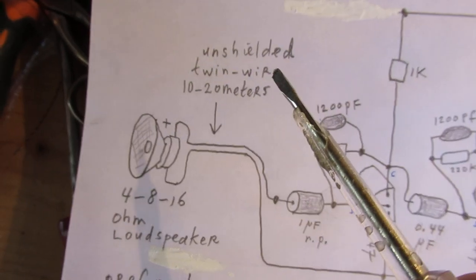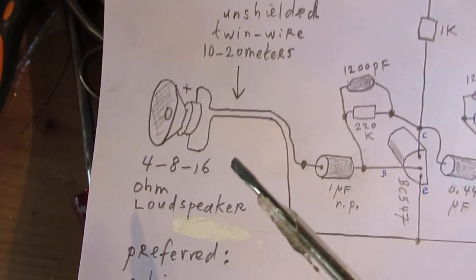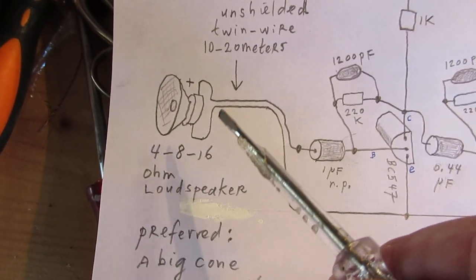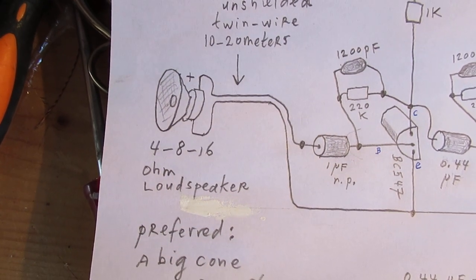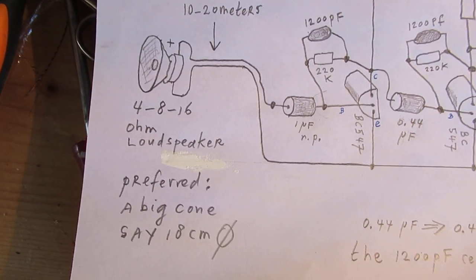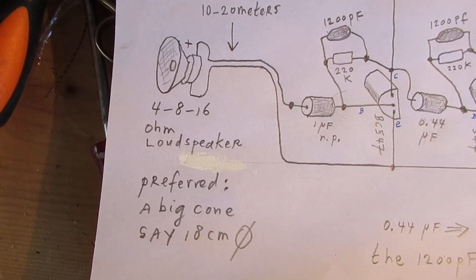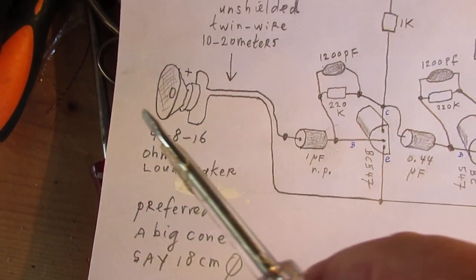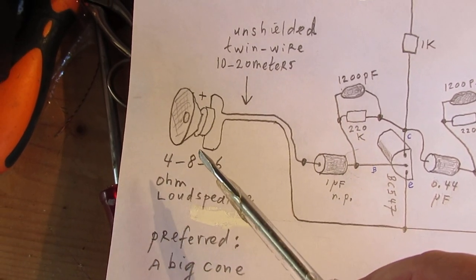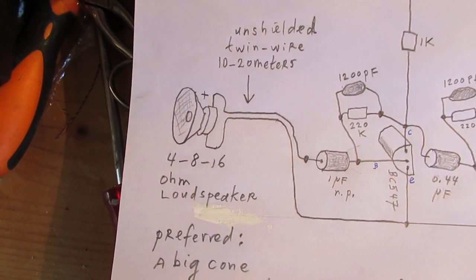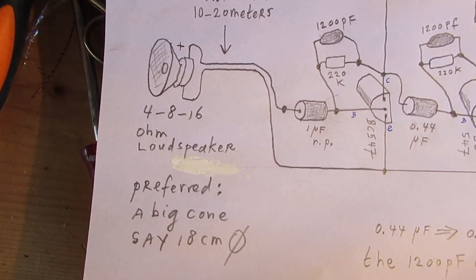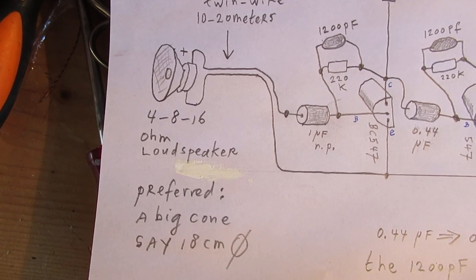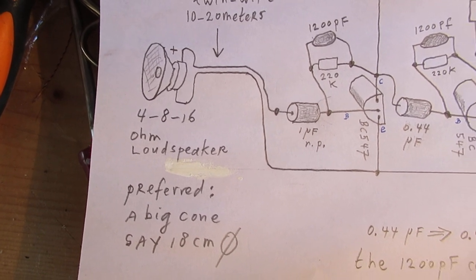Important to tell - unshielded wire, and when you - the best loudspeaker for this application is a loudspeaker with a big cone, say 18 centimeters or so. It picks up far better the signals in the room when the cone is big, so it gets more sensitive to sound.